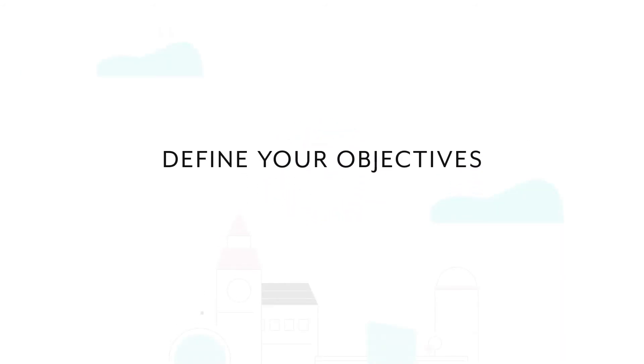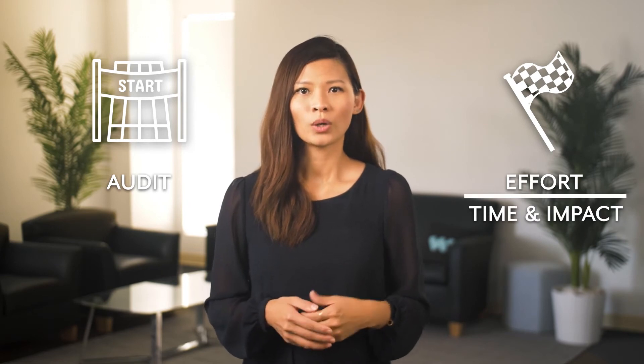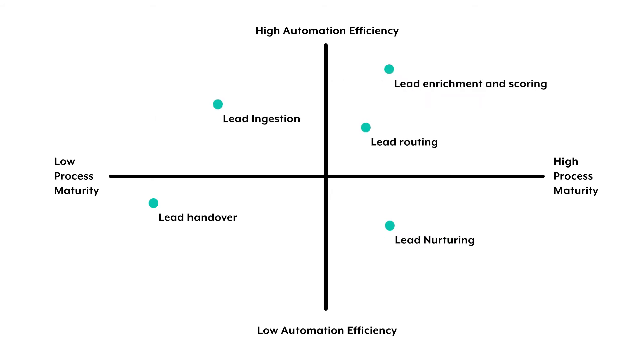Define your objectives. Not all buyers require the same lead management process. Outlining key touch points along the customer journey and identifying where each segment fails will help you to build a structured objective setting. When defining your objectives, it's important to have a start and end point. Use the audit as your starting point. For the end point, you'll want to evaluate effort over time and impact. Once you have done that, you can prioritize the items with the highest impact and least amount of effort. Mapping your process out in terms of process maturity and automation efficiency can give you the starting point to identify which processes require your attention and which are low-hanging fruit.